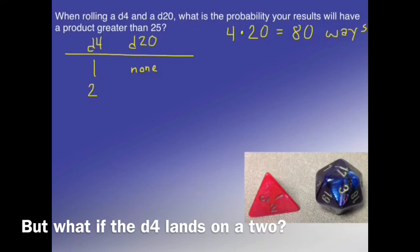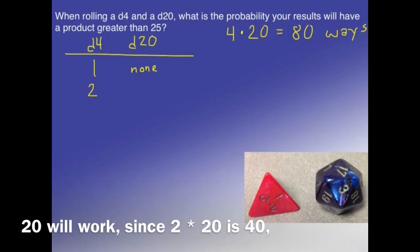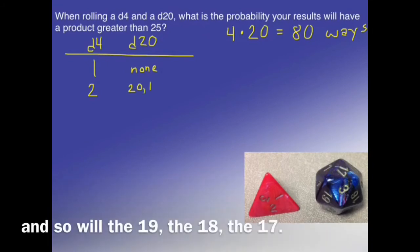But what if the d4 lands on a 2? The 20 will work, since 2 times 20 is 40, and so will the 19, and 18.